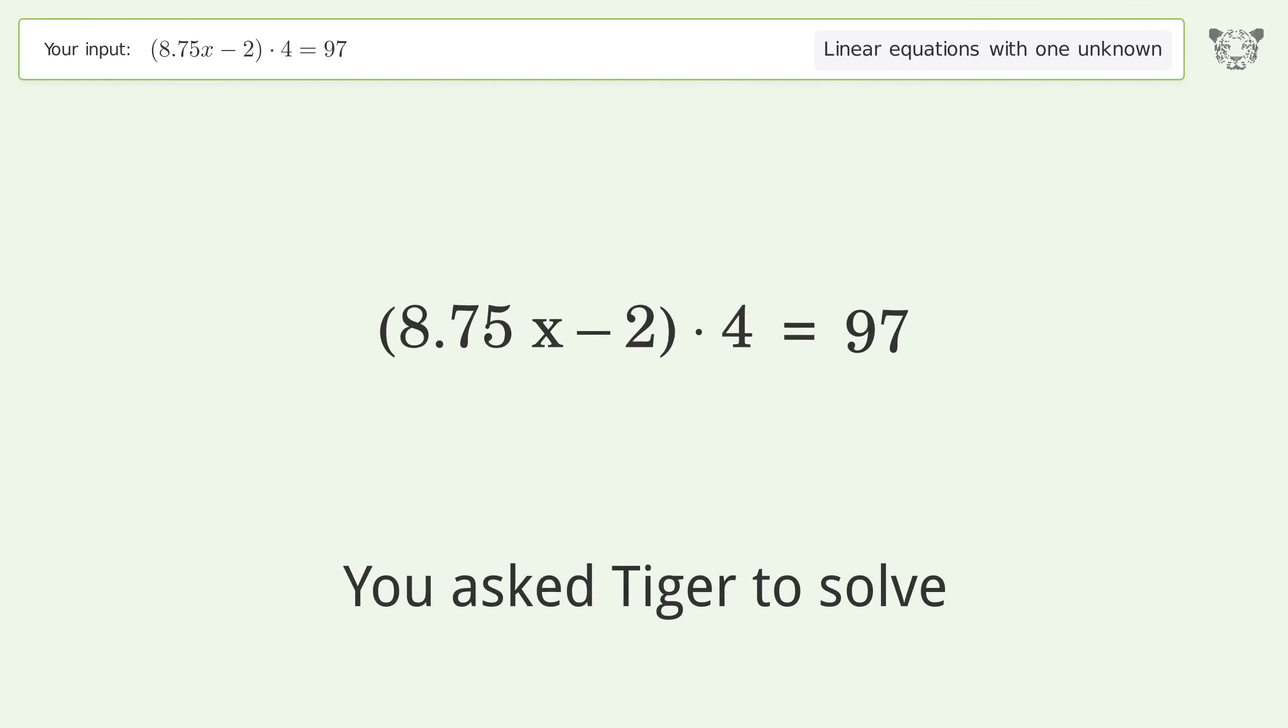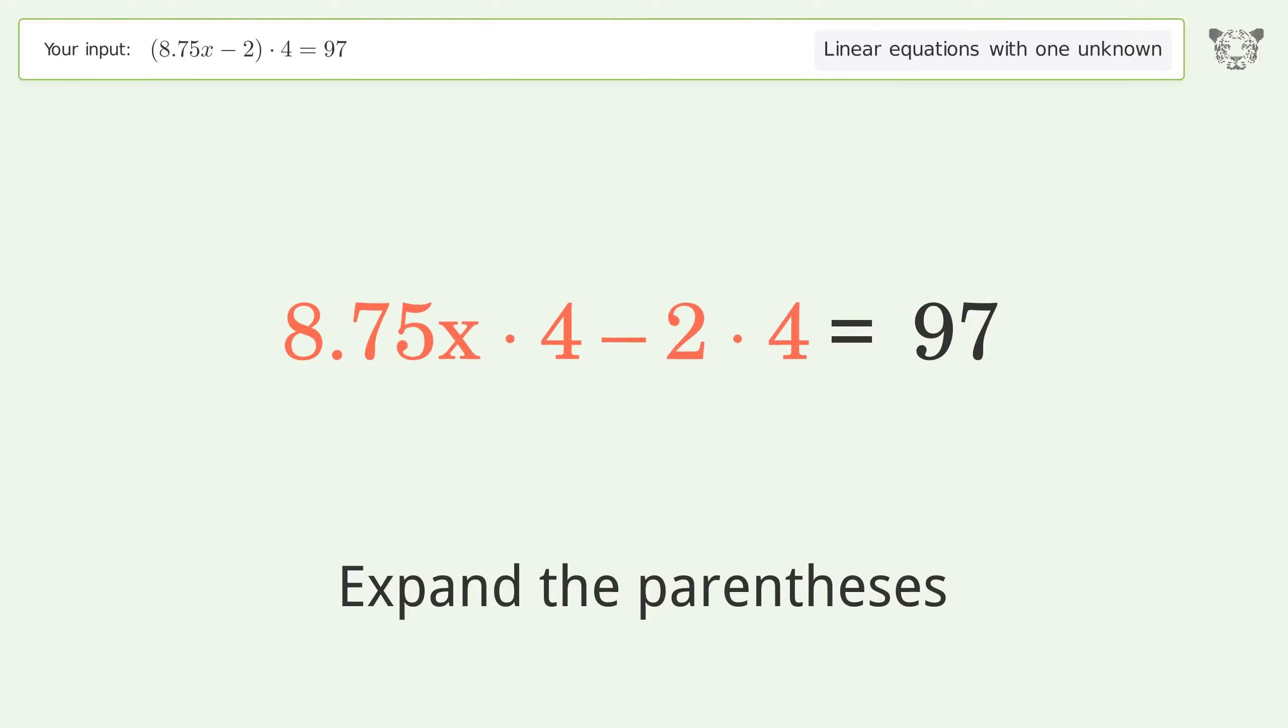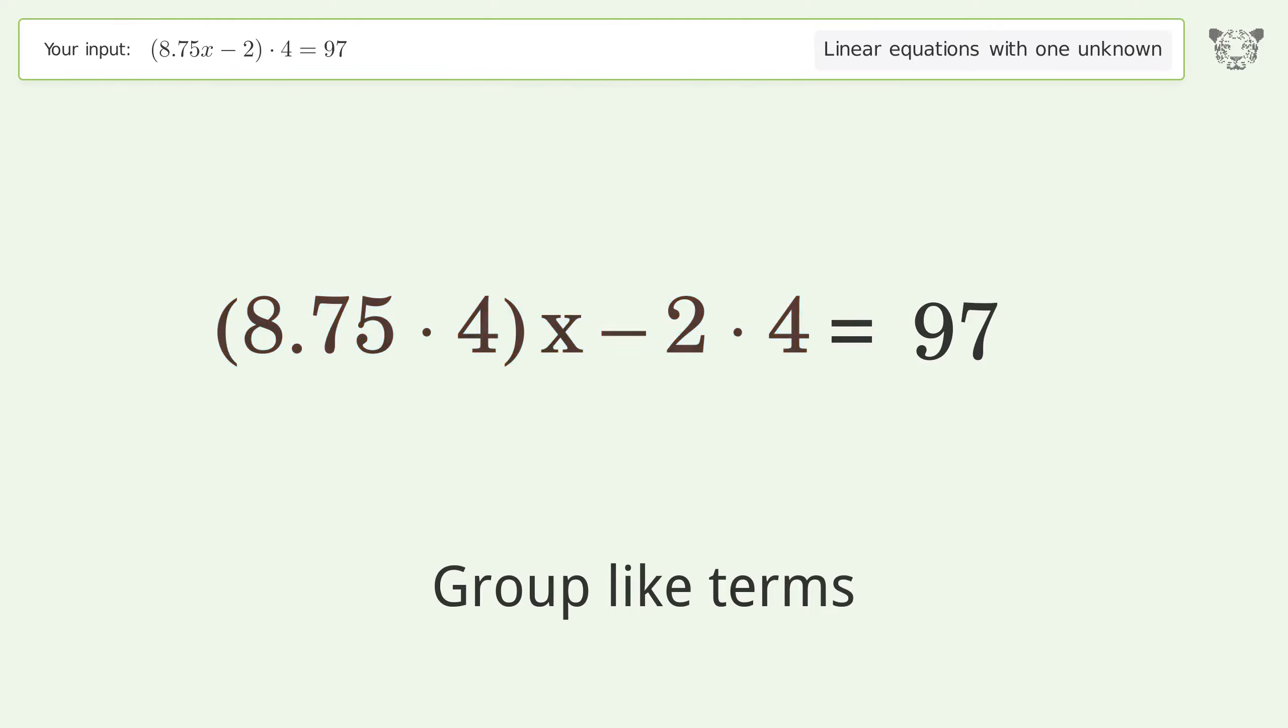You ask Tiger to solve this. This deals with linear equations with one unknown. The final result is x equals 3. Let's solve it step by step: simplify the expression, expand the parentheses, group like terms, multiply the coefficients.